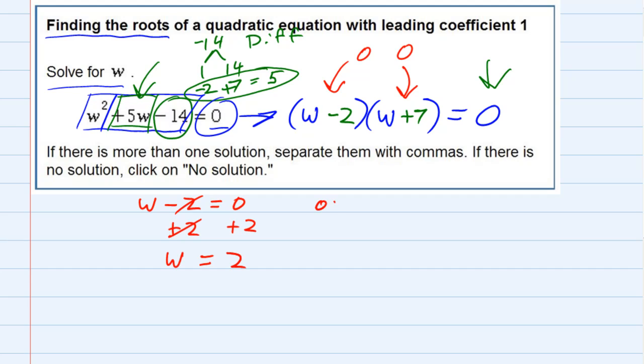Or maybe it's the second one that is equal to 0. So w plus 7 equals 0. If that one is equal to 0 and I'm solving for w, I would subtract the 7 over to the other side, and that would give me w equals negative 7. So you can see I have two solutions here.